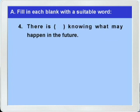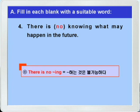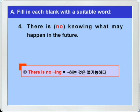다음 문제로 가죠. 4번: 'there is ___ knowing what may happen in the future.' 정답은 아주 간단하죠. 바로 no를 쓰면 되겠습니다. 그래서 'there is no -ing'가 무슨 뜻이었습니까? 그렇죠, '뭐뭐 하는 것은 불가능하다' 이런 뜻입니다.